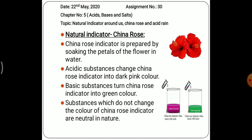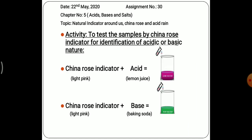If we have an acidic substance, the China rose indicator will change into dark pink color — that is, magenta color, as you can see in the slide. If it is a basic substance, the China rose indicator will turn into green color. If we have a neutral substance, there will be no change in the color of the China rose indicator.